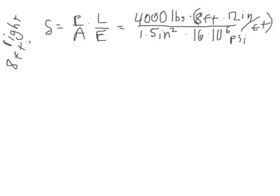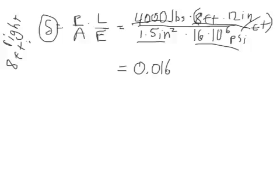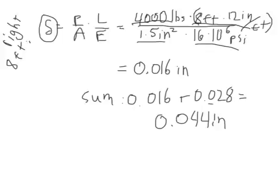So back to our equation to figure out the change in length delta of the right 8 feet. We got that 4,000 pounds. We got the original length of 8 feet, which we convert to inches again. So again, the cross-sectional area is still 1.5 inches squared, and our E-value for copper is still the same. So when you do the math here, you get 0.016 inches of deformation. And that's for the right 8 feet, and we have to add that to the number we just got for the left 4 feet. And we get the total length change for the whole bar.